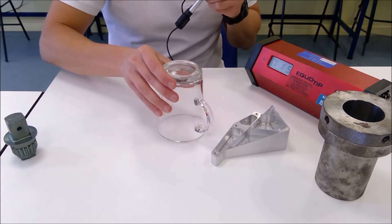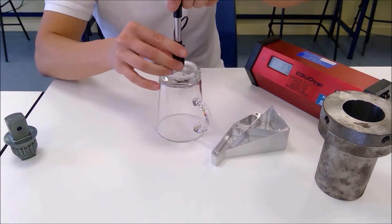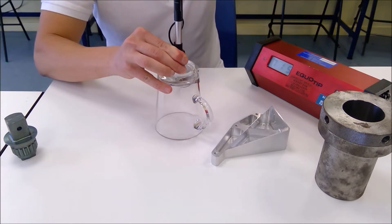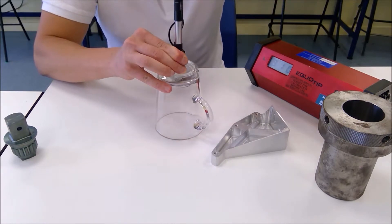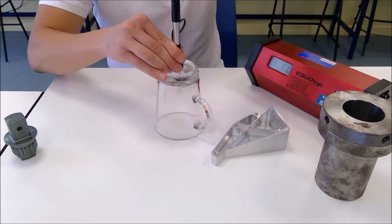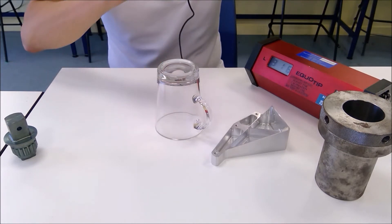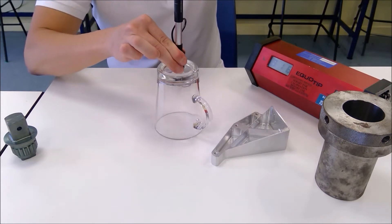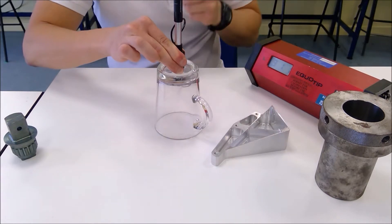And finally onto the glass. We have 910. And again you can hear the rebound from the ball bearing. 916. And finally 911.